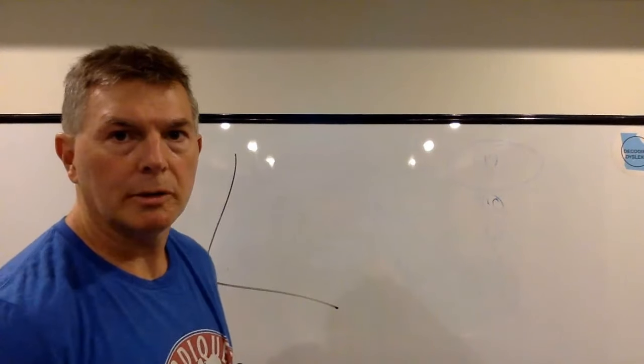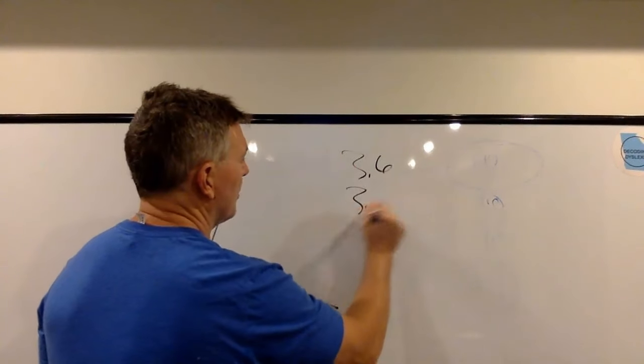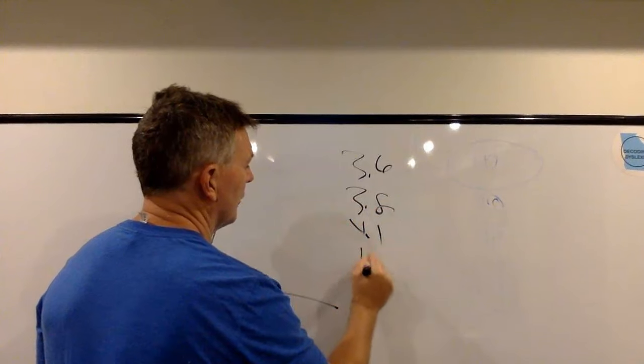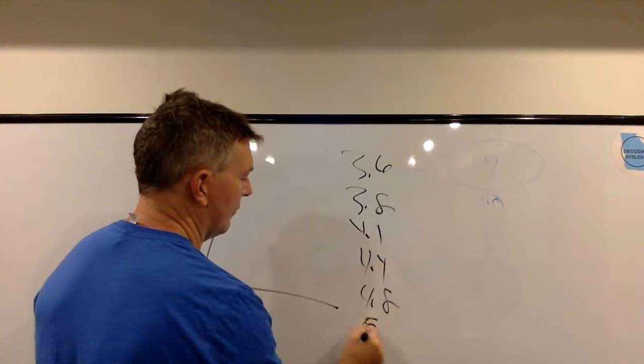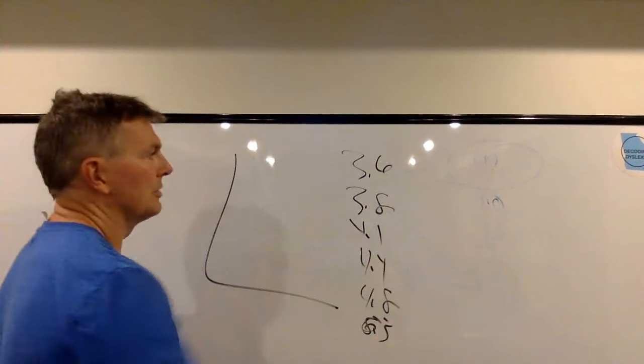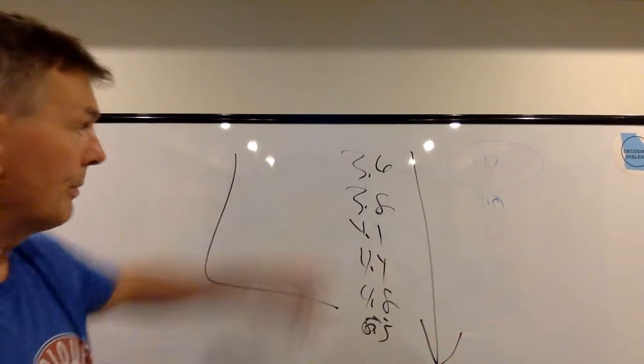My thought process is, if we know how Required Minimum Distributions work - RMDs - you start with 3.6%, you go to 3.8%, 4.1%, 4.4%, 4.8%, 5%, 5.3%. So you're starting with a lower amount and it's getting larger as you get older.